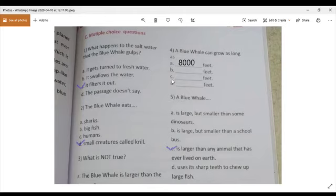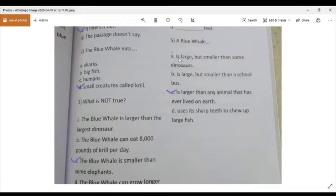Number four. A blue whale can grow as long as 8,000 feet. Number five, a blue whale is large but smaller than some dinosaurs. This is not true. Number four, a blue whale is large but smaller than a school bus, also not true.